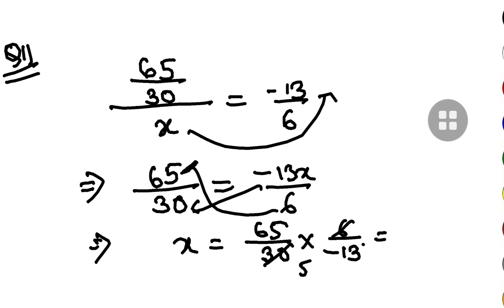6, 30, 5 times, 13, 65, also 5 times, 5 and 5 cancel. The final answer is minus 1. That is question number 11.